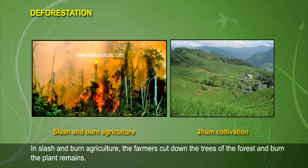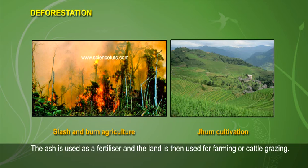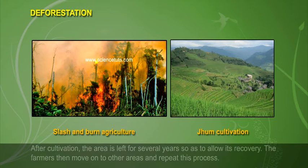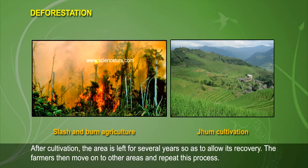In slash and burn agriculture, the farmers cut down the trees of the forest and burn the plant remains. The ash is used as a fertilizer and the land is then used for farming or cattle grazing. After cultivation, the area is left for several years so as to allow its recovery.